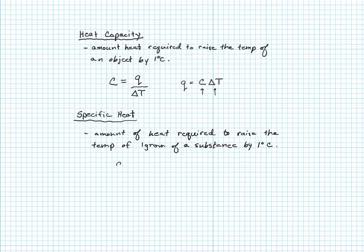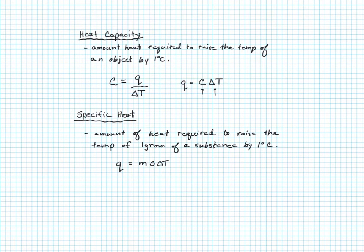Specific heat can be related to the amount of heat required to change the temperature: heat is going to be equal to the mass times the specific heat times the change in temperature. This factors in the amount of the substance, the properties of the substance itself through the specific heat, and the change in temperature induced by the addition or removal of heat. These are both very useful values that are going to help us pull information out of a calorimetry experiment.